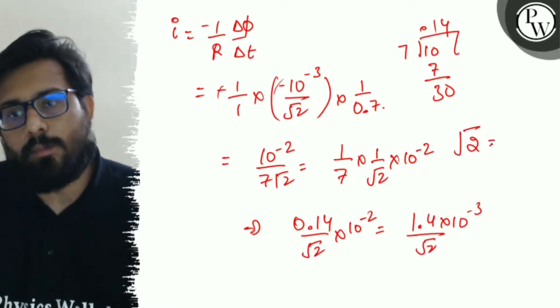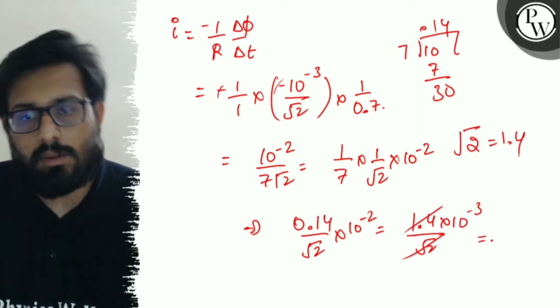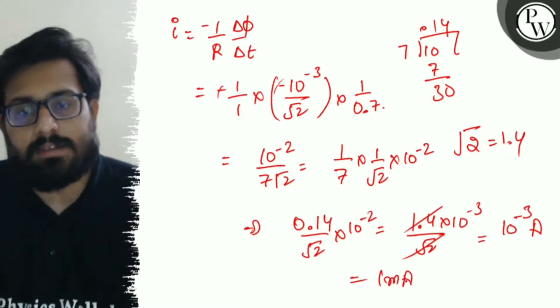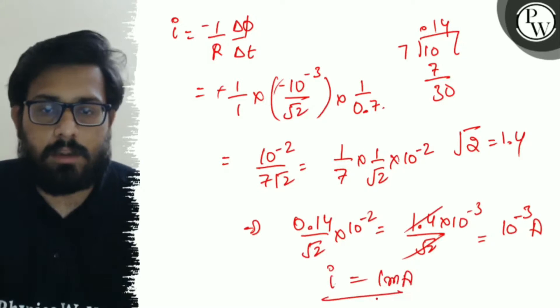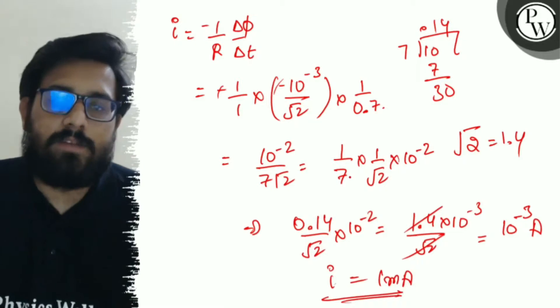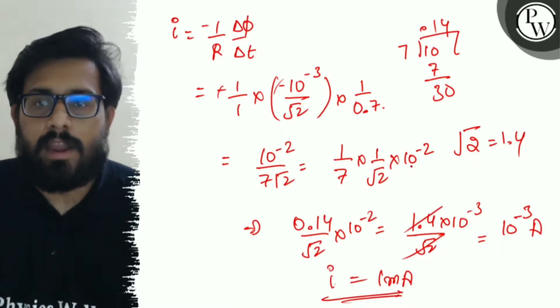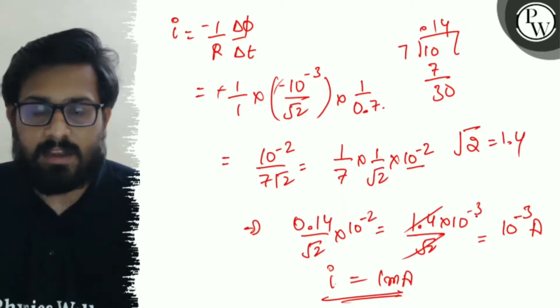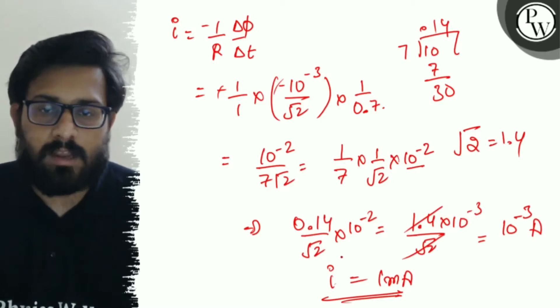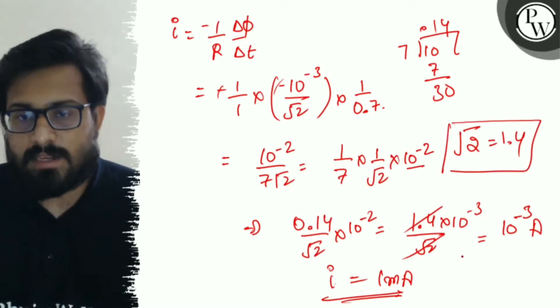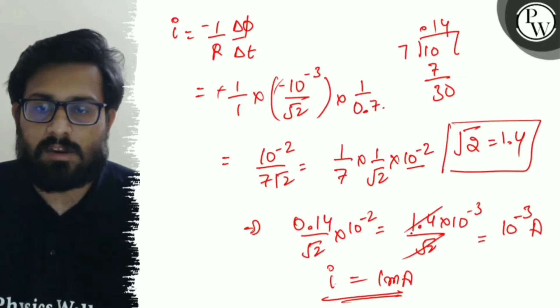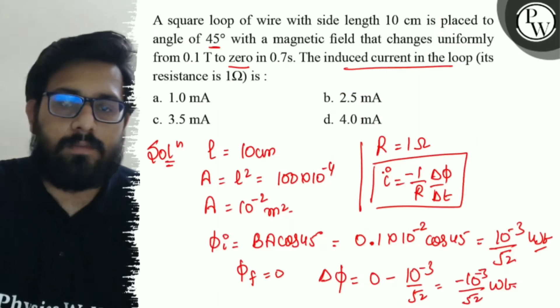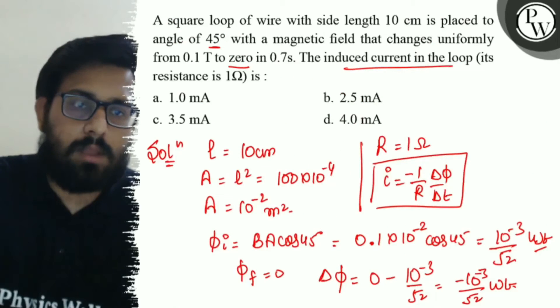Root 2 cancels out to give 10 to the minus 3 ampere or 1 milliampere is the value of the induced current. So 1 by 7 gives 0.14 into 10 to the minus 2, which can be further written as 1 milliampere. Your answer is option A.